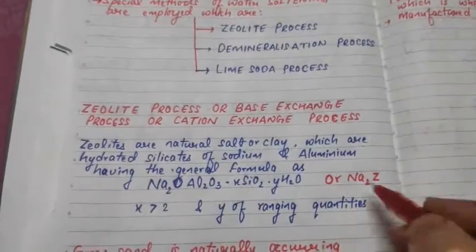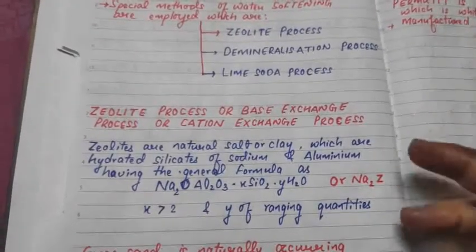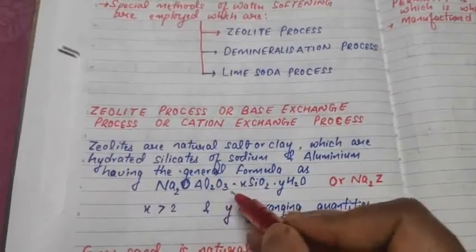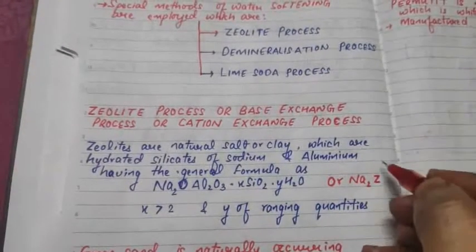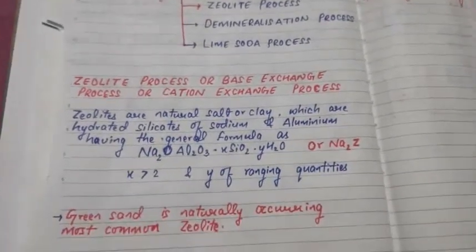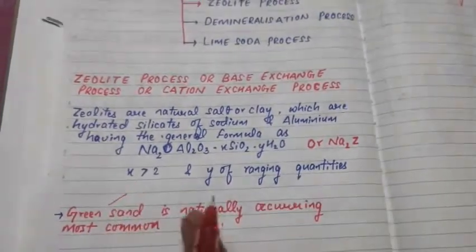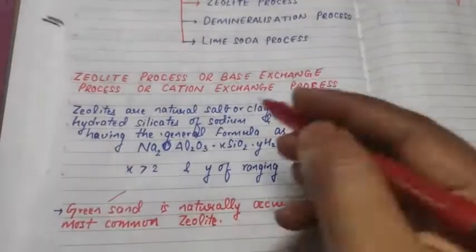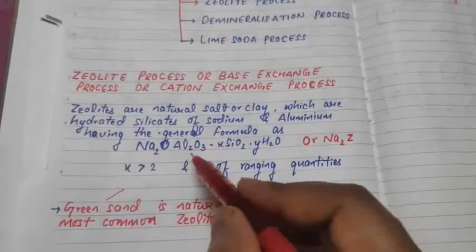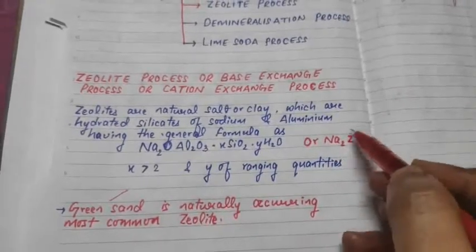The zeolite formula in short form is written as Na₂Z, where Z represents the complex zeolite radical Al₂O₃·xSiO₂·yH₂O. The most commonly naturally occurring zeolite is green sand.